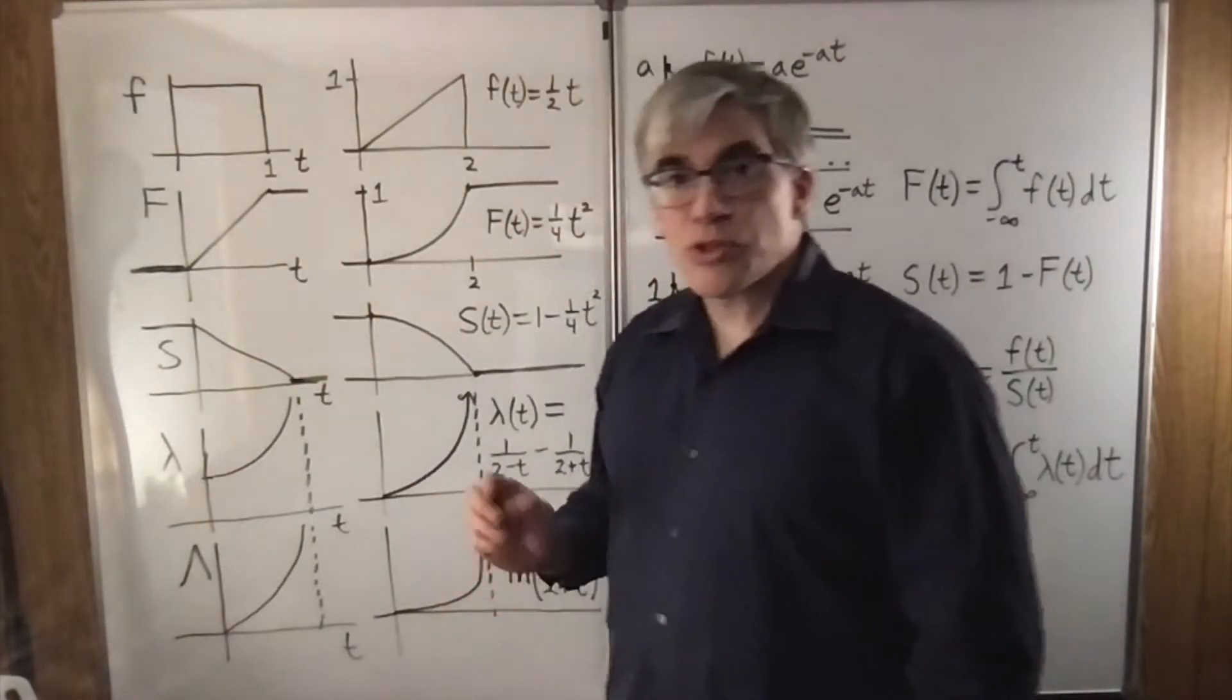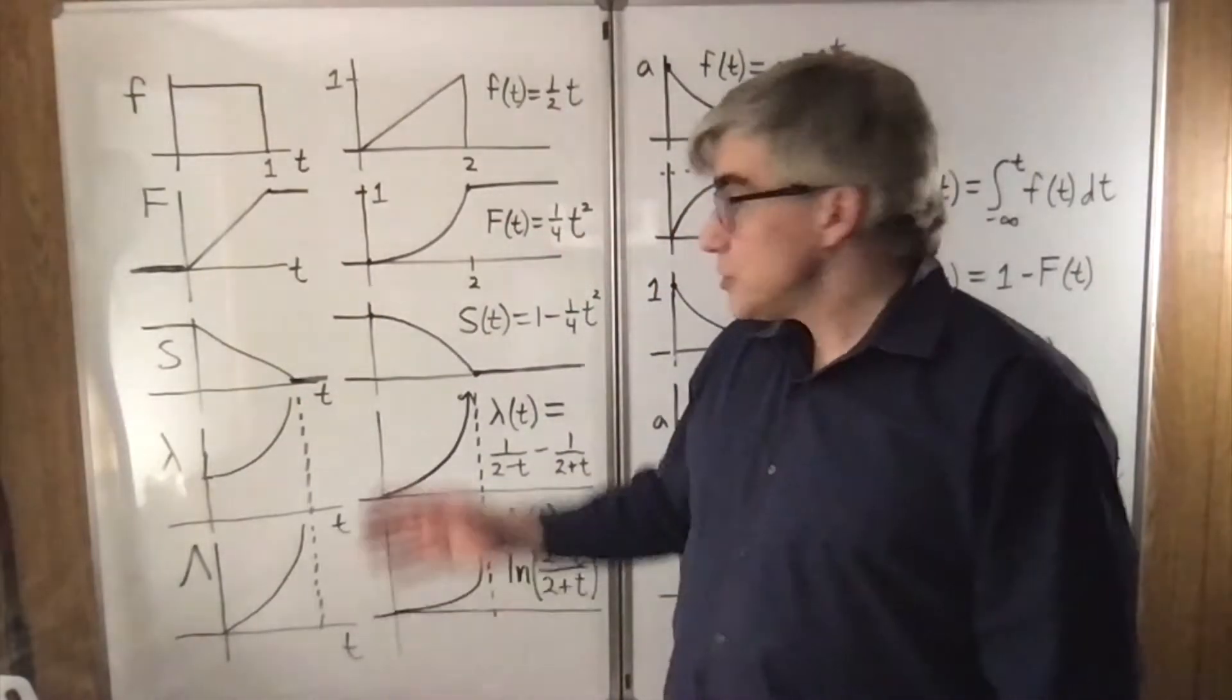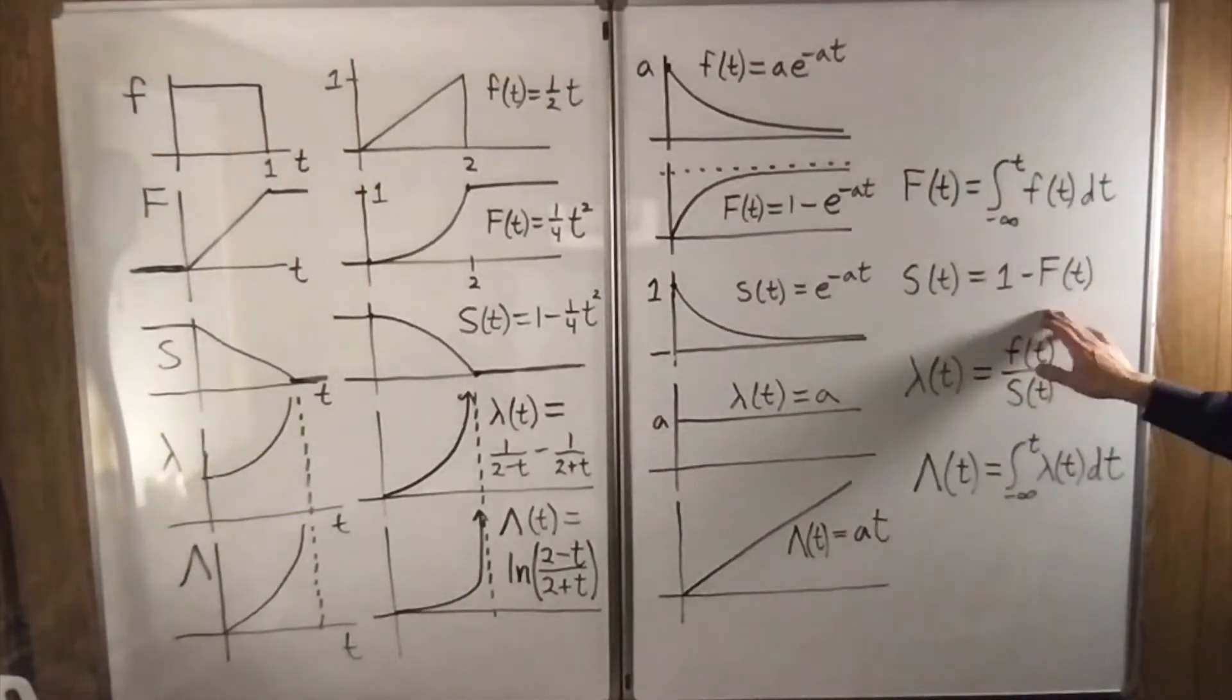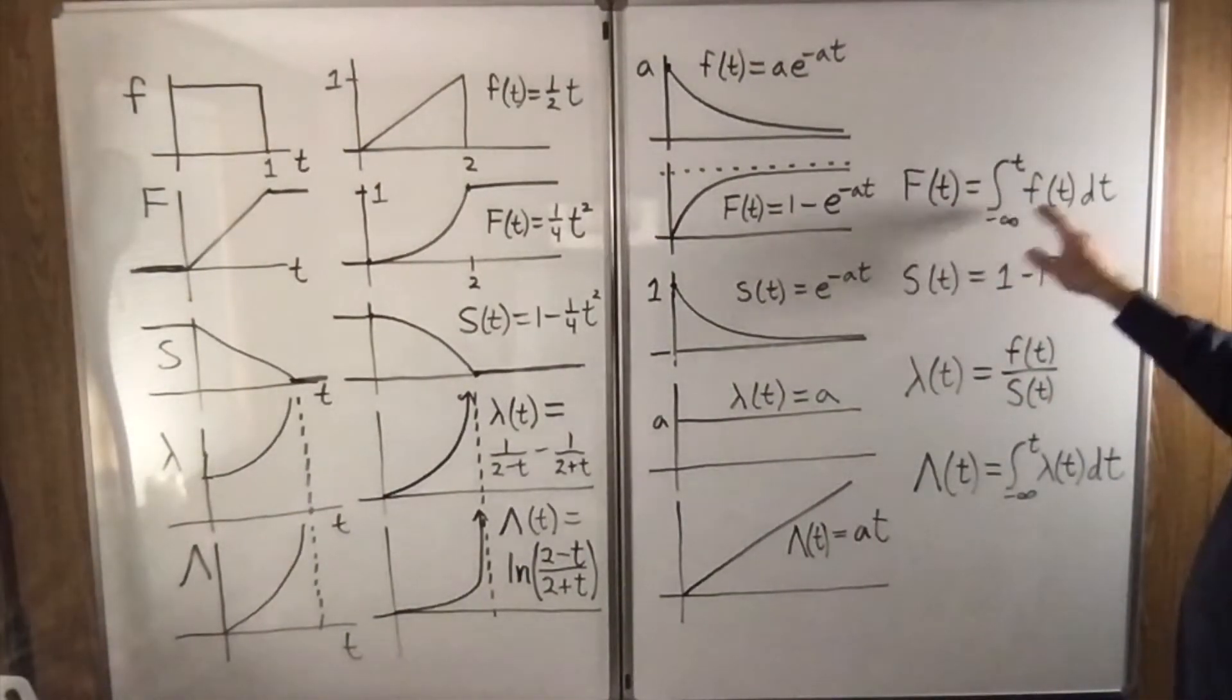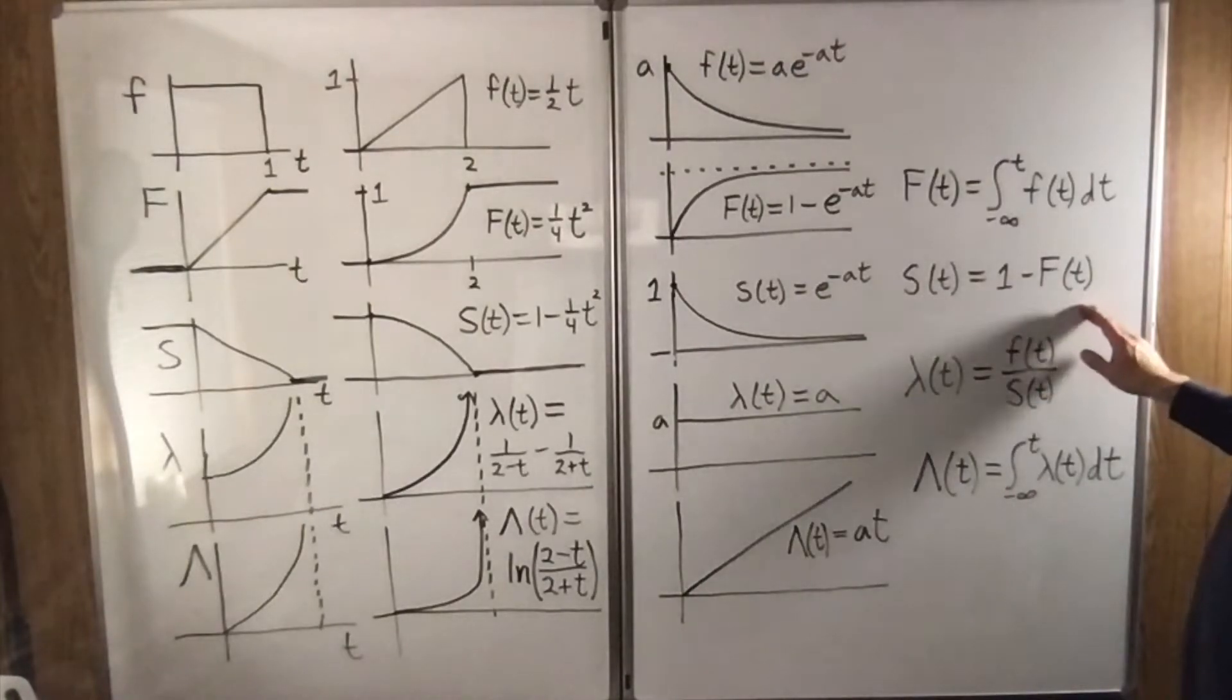S is the survival function. It's just 1 minus big F of T. Big F is the probability that the event has happened. S of T is the probability that it hasn't happened.